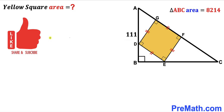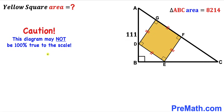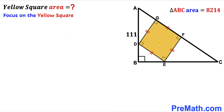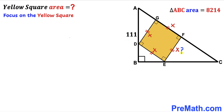Please don't forget to give a thumbs up and subscribe, and keep in mind that this figure may not be 100% true to scale. Let's get started. Focusing on the yellow shaded square DEFG, let's assume its side length is X units. Since all sides of a square are equal, each side length is X units. Our task is to find X before we can calculate the area of the yellow shaded square.